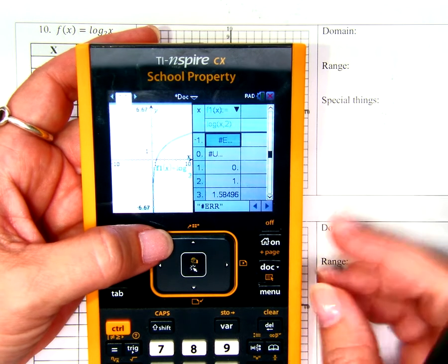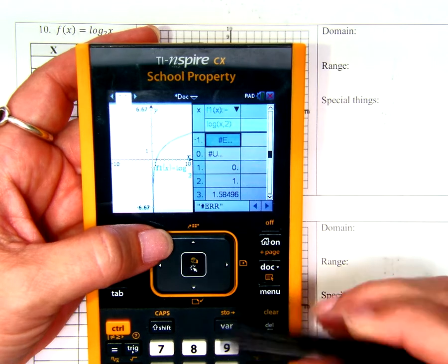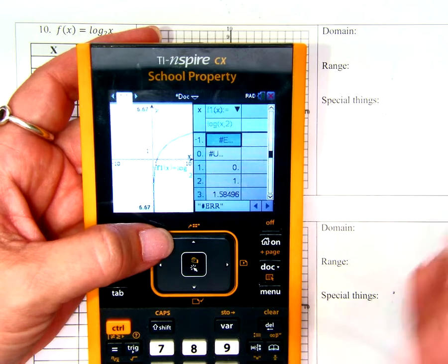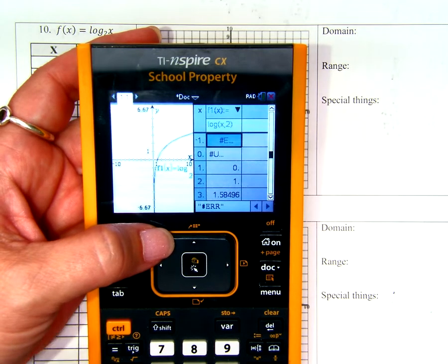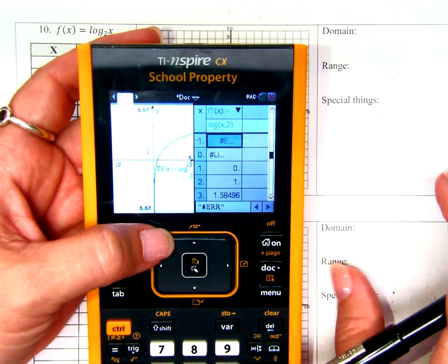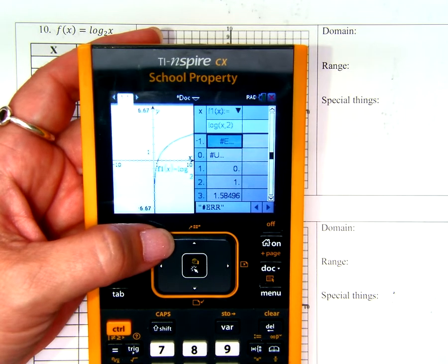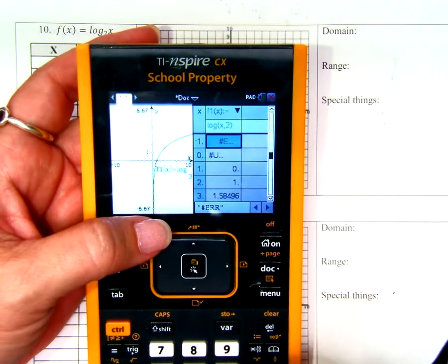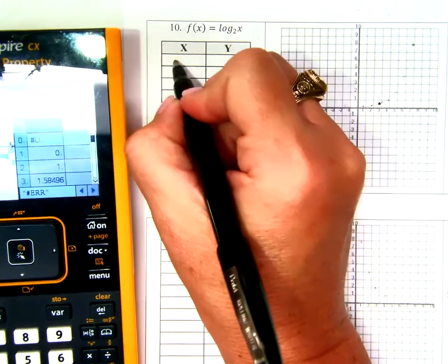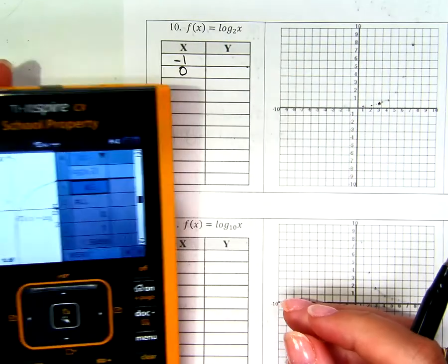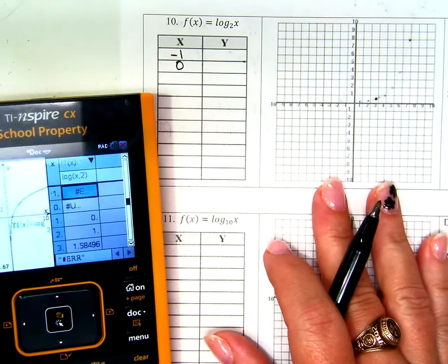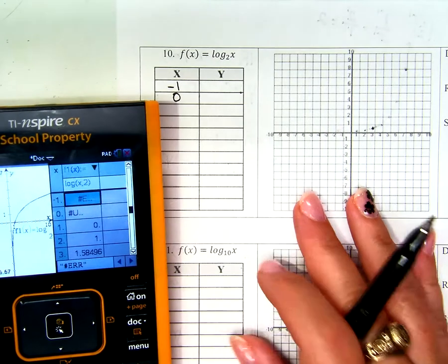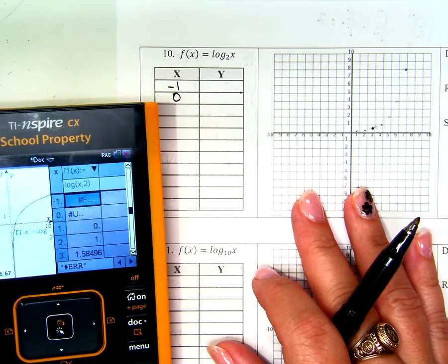Error. But what does it say for zero? Error. Undefined. Those two things mean something different. They mean the same, as in we can't graph anything there, but they mean something different for us, and right now is not the time to talk about that. So, right now, I just need you to trust me that they mean something different. I want to have negative one and zero on my table, so that I know something weird is happening around there, but we're going to talk about that when we get to the logarithms unit in this school year. Can you trust me on this one?